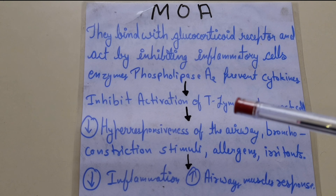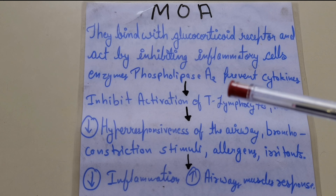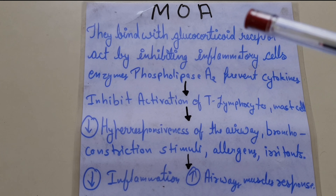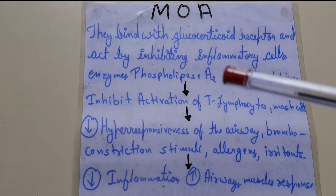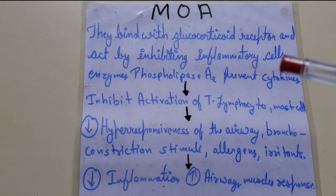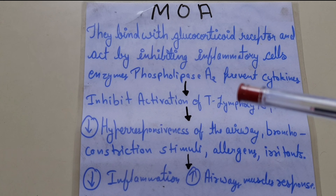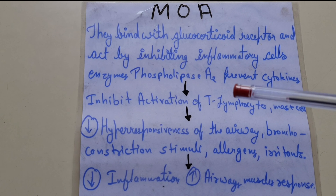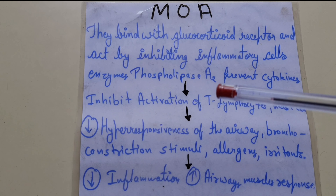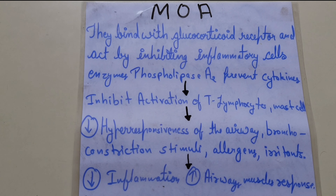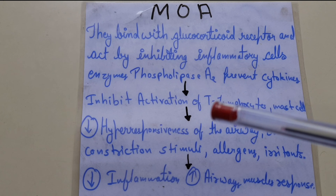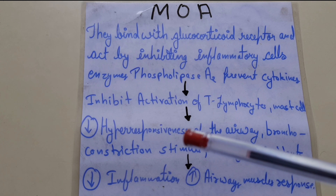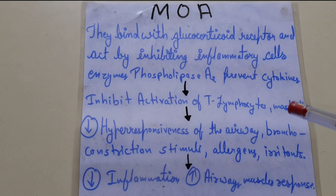Mechanism of action: corticosteroids bind with glucocorticoid receptors and act by inhibiting inflammatory cells, enzymes like phospholipase A2, and prevent cytokines. They bind to glucocorticoid receptors and inhibit inflammatory cells, enzymes, and phospholipase A2 — all factors responsible for the inflammatory reaction, including cytokines and activation of T-lymphocytes.